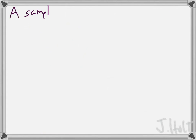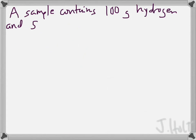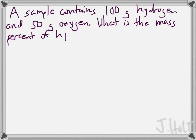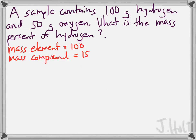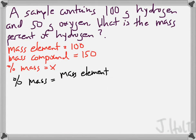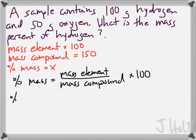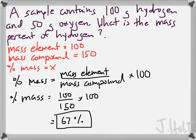Let's do another example where we change the variable. A sample contains 100 grams of hydrogen and 50 grams of oxygen. What is the mass percentage of hydrogen? Here we're given the mass of the element. We know the mass of the compound because we can add them together — 100 grams of hydrogen plus 50 grams of oxygen gives a total of 150 grams. We're trying to find the mass percentage. Plugging everything into the formula gives us a mass percentage of 67%.